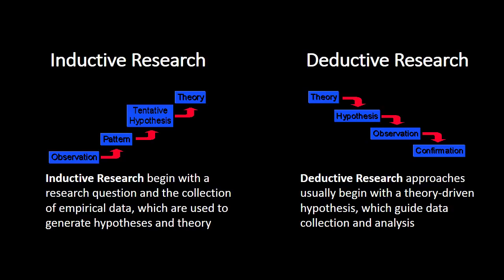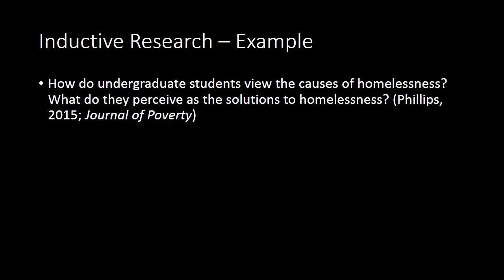Now let me give you some examples of inductive and deductive research approaches. An example of an inductive research question might be: how do undergraduate students view the causes of homelessness? What do they perceive as the solutions to homelessness? Rather than identifying an existing social theory, with this research question, you might begin by collecting data from a group of undergraduate students and really try to understand how they view the causes of homelessness and what they perceive as the solutions.